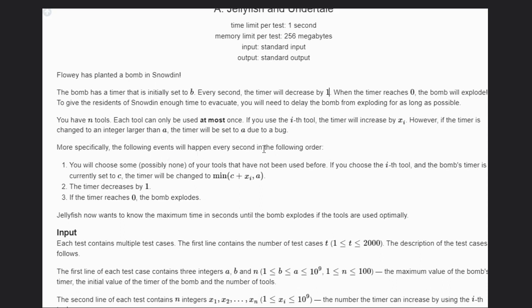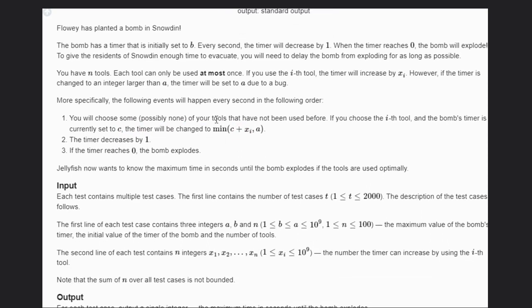More specifically, the following events will happen every second in the following order: You will choose some, possibly none, of your tools that have not been used before. If you choose tool i, the timer currently set to C will change to minimum of C plus xi comma A.